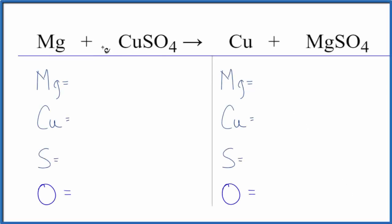In this video we'll balance the equation for magnesium plus copper 2 sulfate, Mg plus CuSO4. Let's count the atoms up on each side of the equation. We have one magnesium atom, one copper, one sulfur, and four oxygen atoms.